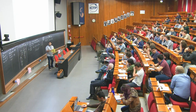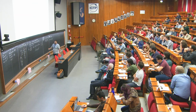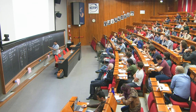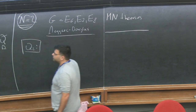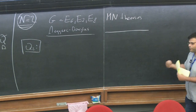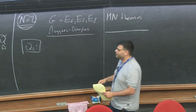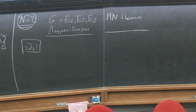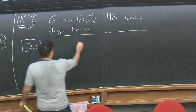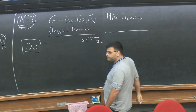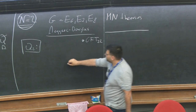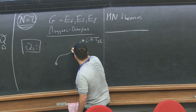Question number two is of the following sort: how many different flows can lead to the same CFT in the IR? We know of many examples where you have some strongly coupled CFT in the IR to which you can flow starting from very different Lagrangians. There is one CFT in the UV that you can choose, there is another CFT in the UV, and many different starting points from which you can flow to the same theory.